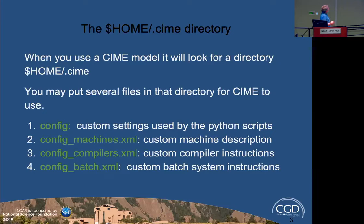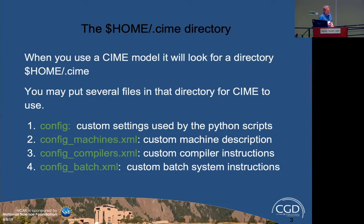You can define a new machine locally in your home .seam directory, or you can define a new machine and submit a pull request to SEAM, and we'll keep that updated as we do further development — so if you get a new code base, it should still work on your machine with the original port. When you build a SEAM model, it looks for this directory. The important files are config_machines.xml — which has a description of the machine you're using — config_compilers, which defines the compilers, and config_batch, which defines the batch system: PBS, SLURM, LFS, or whatever you're using.